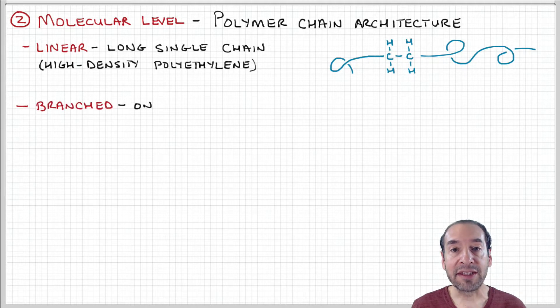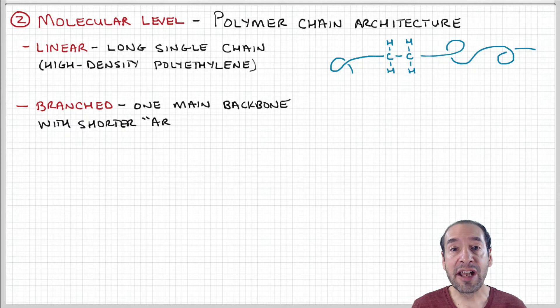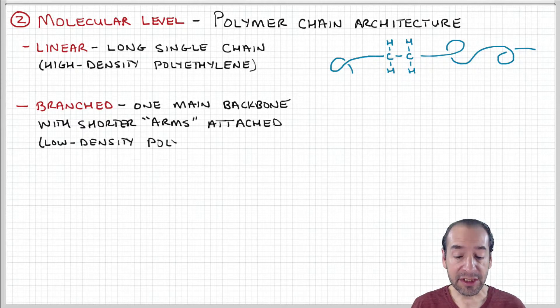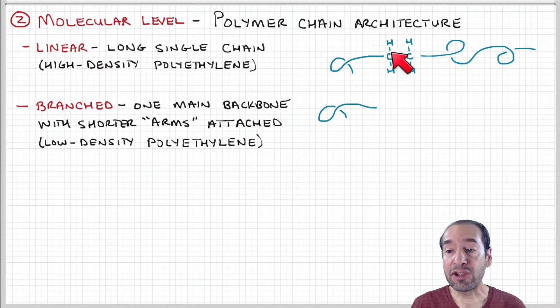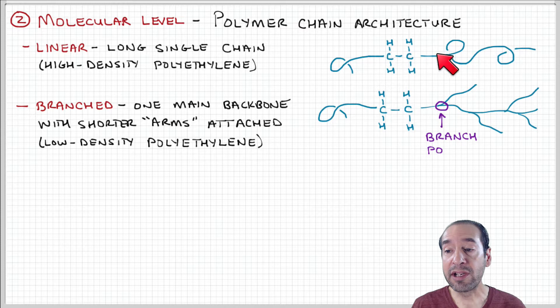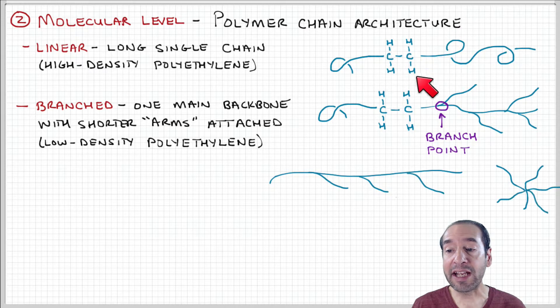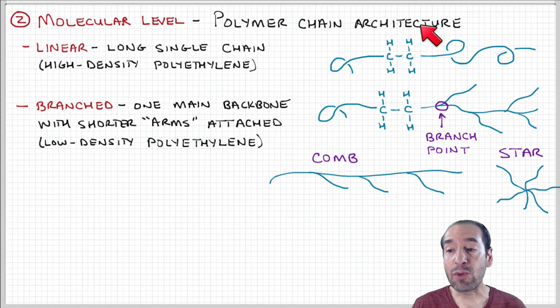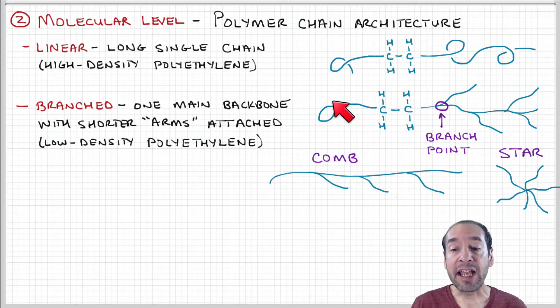Low-density polyethylene is an example of a branched architecture. There's still a primary backbone, but instead of being linear, you have arms or branch points where shorter chain segments propagate outward. Instead of a hydrogen, you could have a carbon that forms a mini backbone for another subchain.